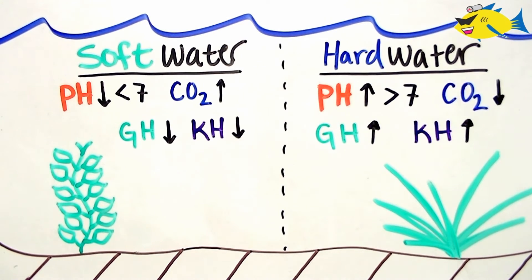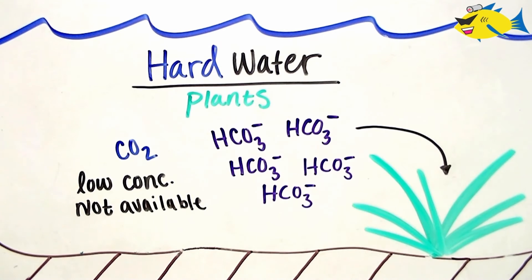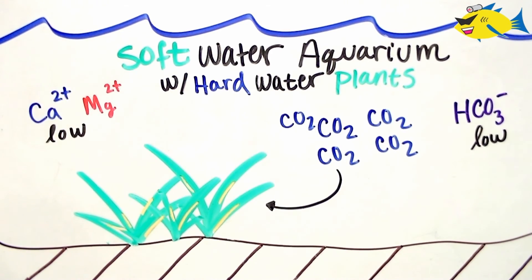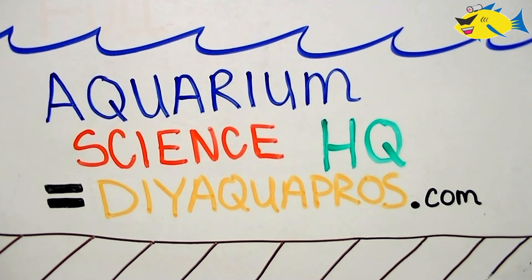To review: soft water refers to a lower pH, KH, and GH, and will also have higher concentrations of CO2. Hard water refers to a higher pH, GH, and KH, and will also have lower concentrations of available CO2. Soft water plants use CO2 for carbon assimilation and typically don't have the ability to utilize bicarbonate, even if it's available. Hard water plants prefer CO2, but many of them have adapted strategies to effectively use bicarbonate for carbon assimilation. The next time you buy aquarium plants, ask about their natural habitat. Having previously tested your water, you'll know that you're placing them in an environment in which they will succeed. To learn more about plant physiology and water chemistry, check out more of our aquarium science videos on our website.